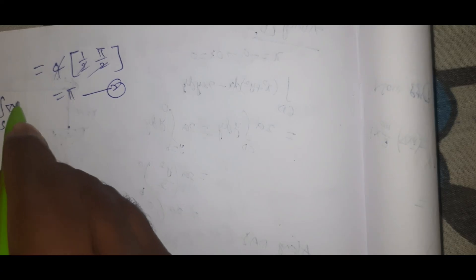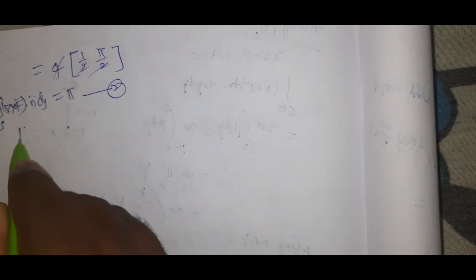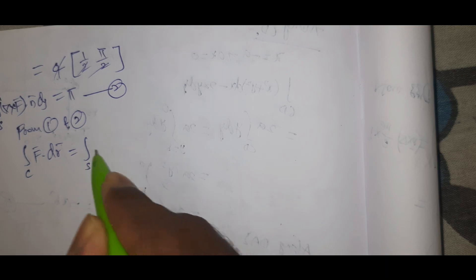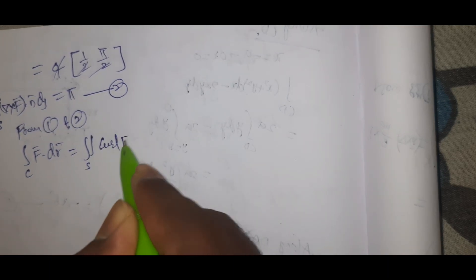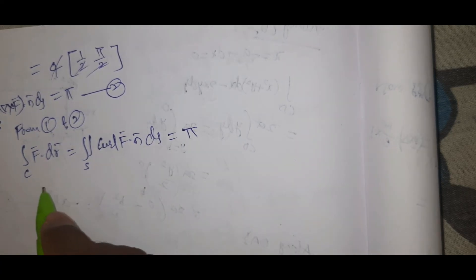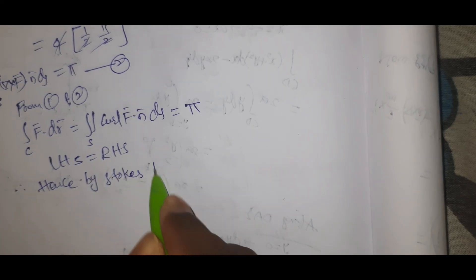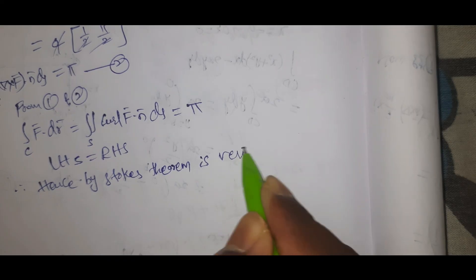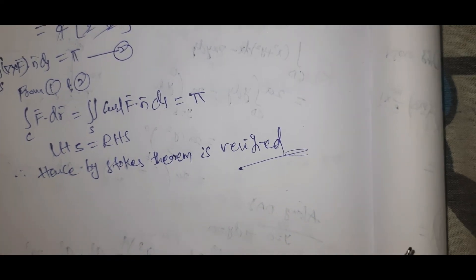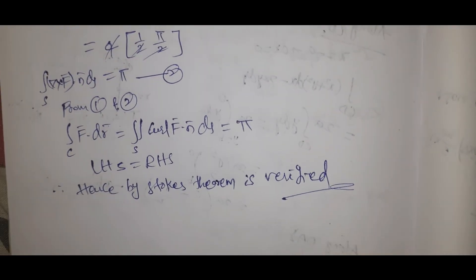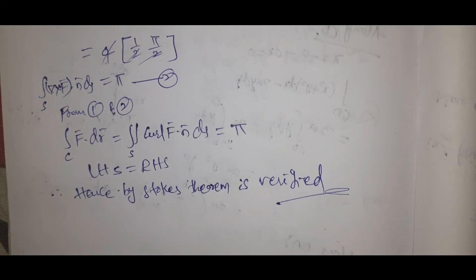From equations 1 and 2, ∫C F̄·dr̄ = ∬S curl F̄·n̄ dS = π. Therefore LHS = RHS = π. Hence Stokes theorem is verified. It is easy — first compute LHS, then RHS, and show they are equal. If you have any doubts, please comment below. Please subscribe to my channel, like and share. Thank you everyone.